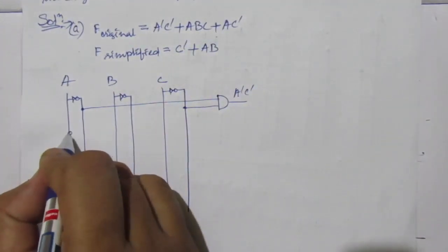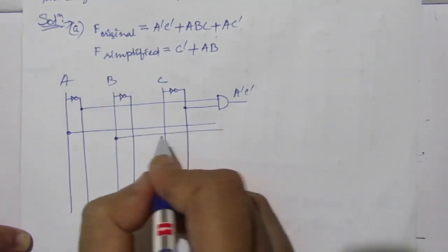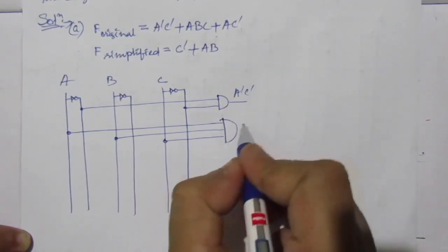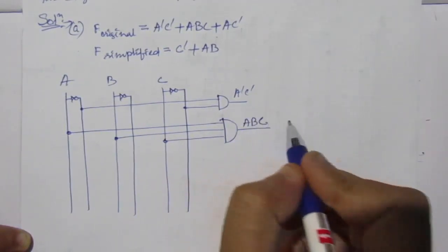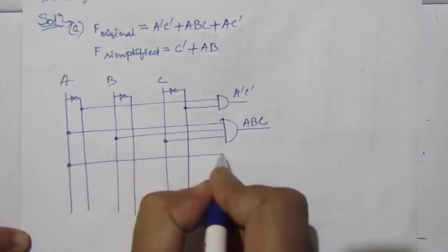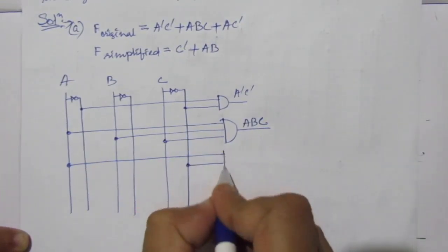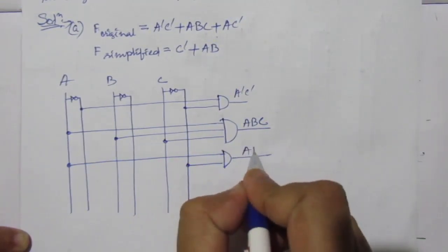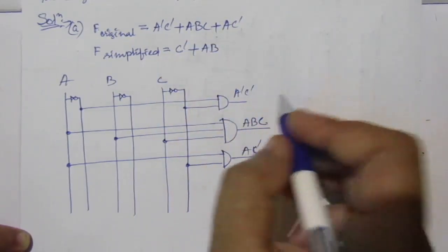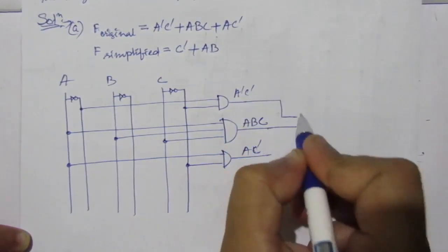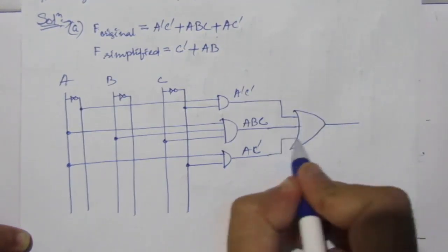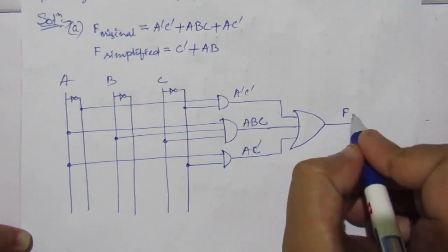Then for the term a·b·c: a is this line, b is this line, and c is this line — use an AND gate. Then we have the term a·c̄: a is this line, c̄ is this one, use an AND gate to get a·c̄. Then we have to add all three terms, so use an OR gate to get f original.